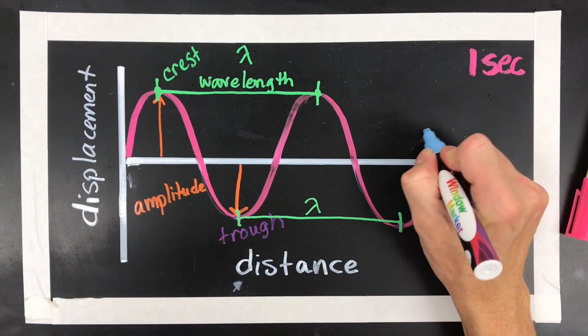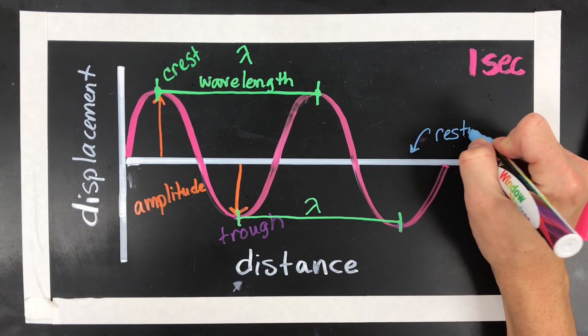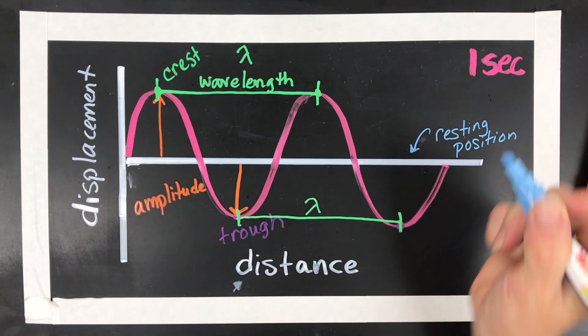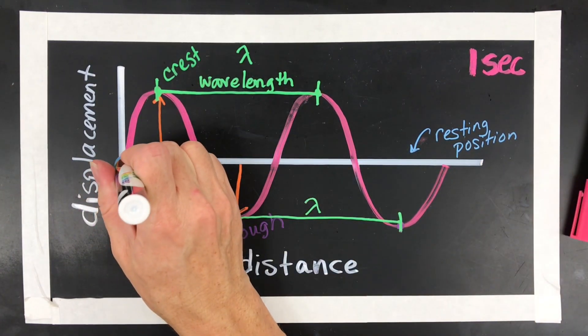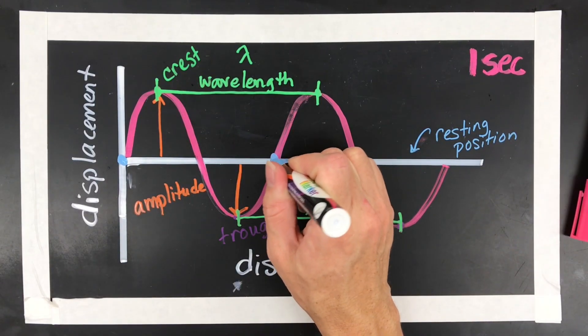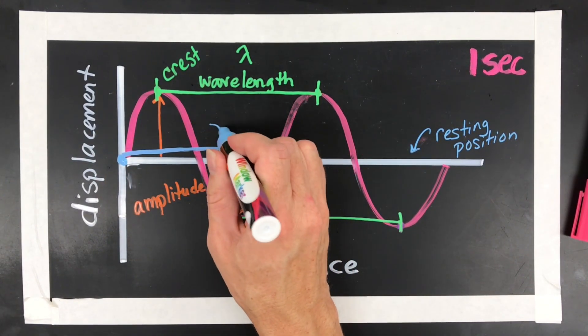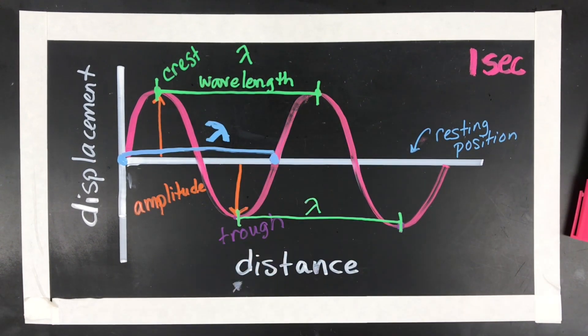This line is called the resting position. And you can do kind of what I call resting point to resting point. So for example, we started here and the wave ended there. That is also wavelength. From here to here is also wavelength. Not a very good lambda there, but there we go.